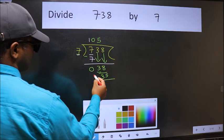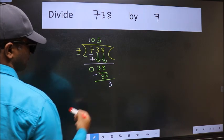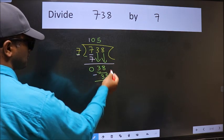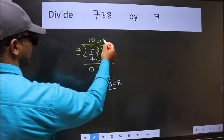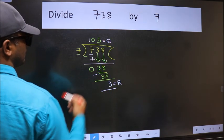Now we should subtract. We get 3. No more numbers to bring down, so we stop here. This is our remainder and this is our quotient. Thank you.